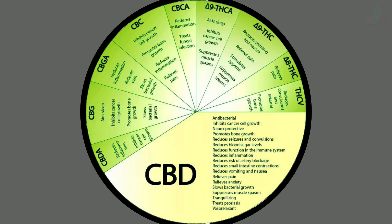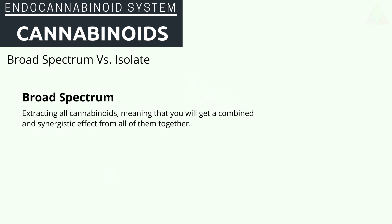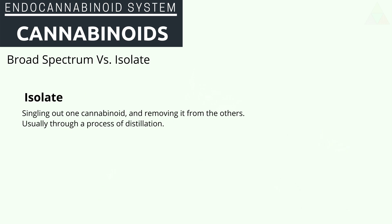This leads us to broad spectrum versus isolate. Broad spectrum means extracting and using all cannabinoids to receive a greater overall effect. Looking at our chart, a broad spectrum would include all of them. This is usually seen in tinctures and CBD concentrates.